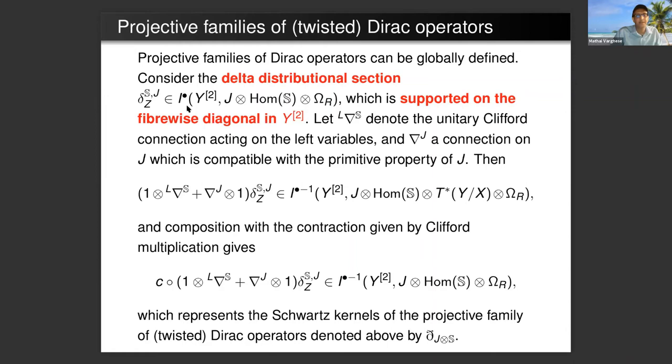This is some Dirac delta function, and it acts on the endomorphisms of spinors. You can look at the unitary Clifford connection acting on the left variables, so that's ∇^{SL}, and ∇^J is the connection on J which is compatible with the primitive property of J. Then you can form the connection. The connection on the Clifford algebra plus the connection on J turns into one.